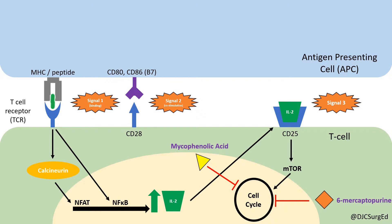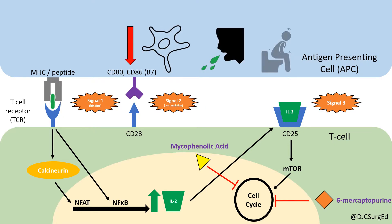There normally is a salvage pathway for GMP production in most cell types; however, this pathway does not exist in lymphocytes. Side effects include leukopenia and GI symptoms of diarrhea, nausea, and vomiting.